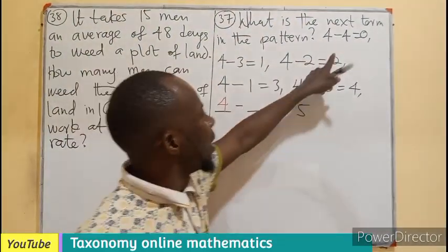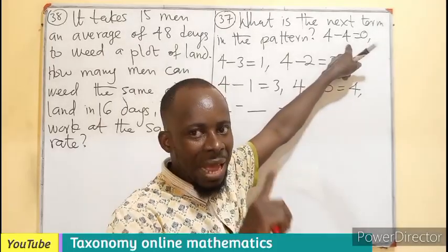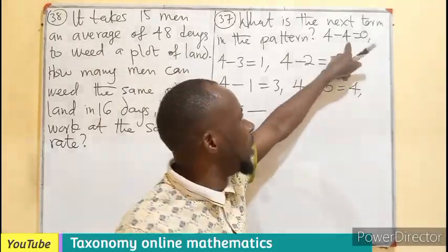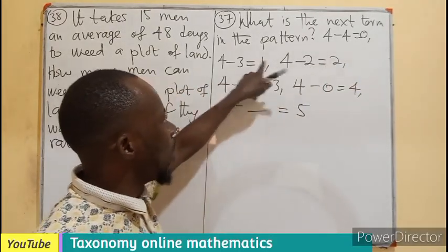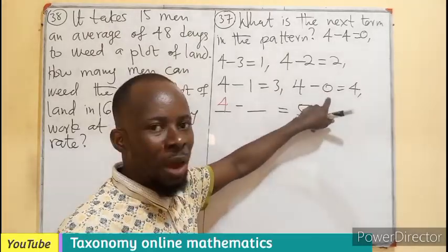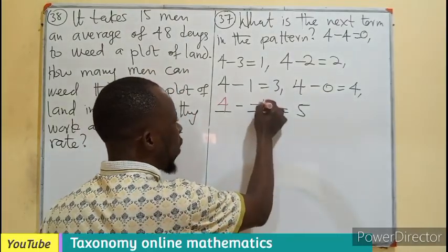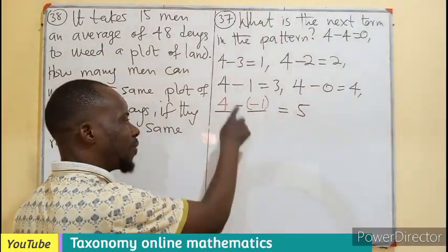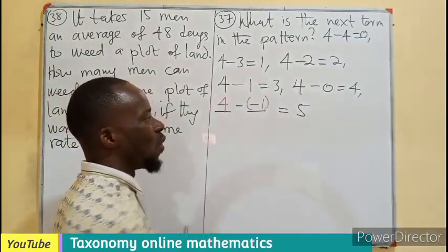I'll be having 4 minus... You can see that the second term is decreasing by 1 while the first term remains the same. Decrease by 1, 3, by 1, 2, by 1, 1, by 1, 0, by 1, negative 1.